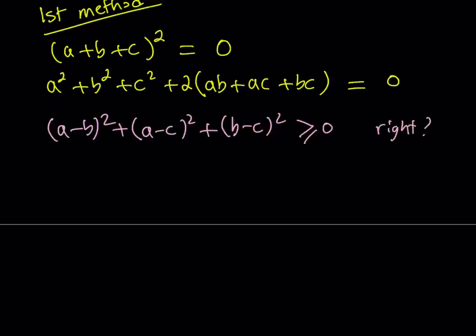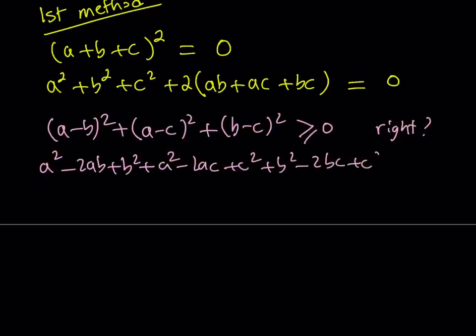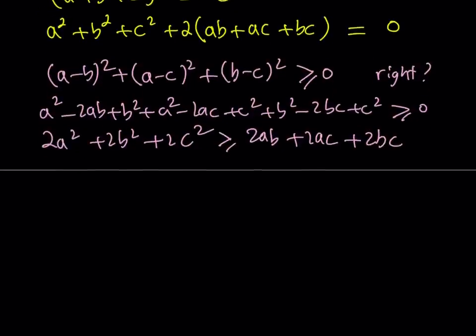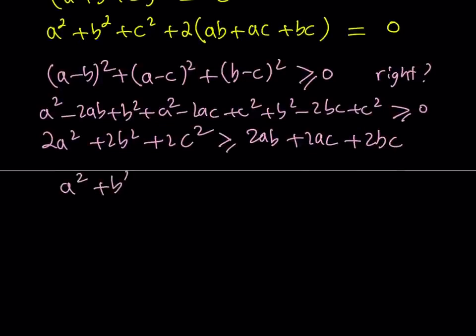Now if you go ahead and expand it, you're going to get a squared minus 2ab plus b squared, plus a squared minus 2ac plus c squared, plus b squared minus 2bc plus c squared, is greater than or equal to zero. If you keep the positive terms on the left-hand side and move the negative terms to the right, you get 2a squared plus 2b squared plus 2c squared is greater than or equal to 2ab plus 2ac plus 2bc. Dividing both sides by 2 gives the well-known inequality.